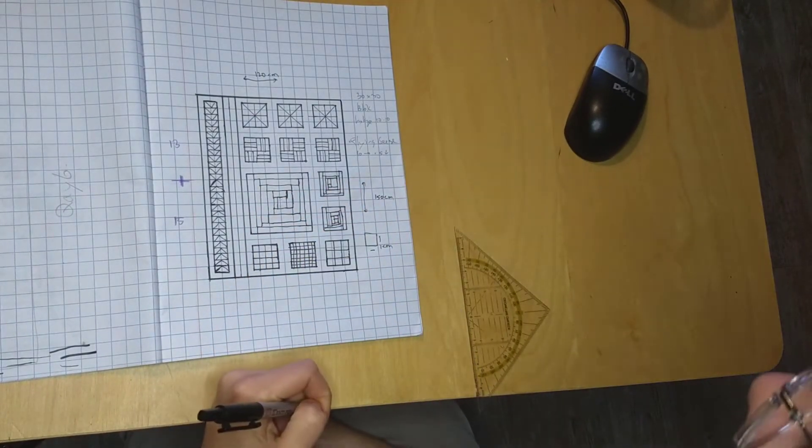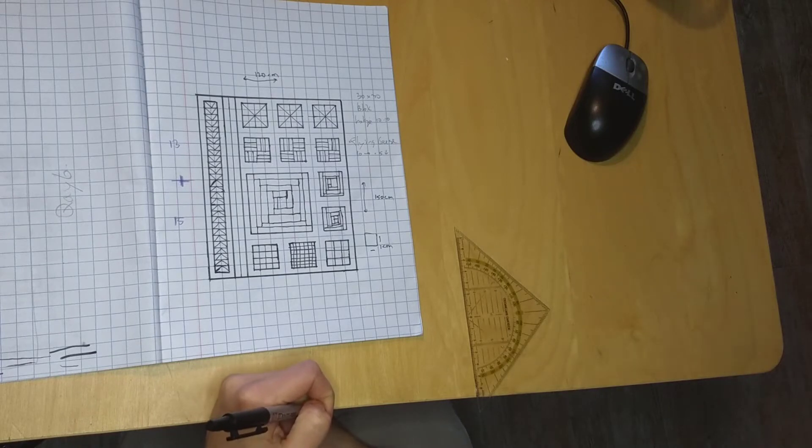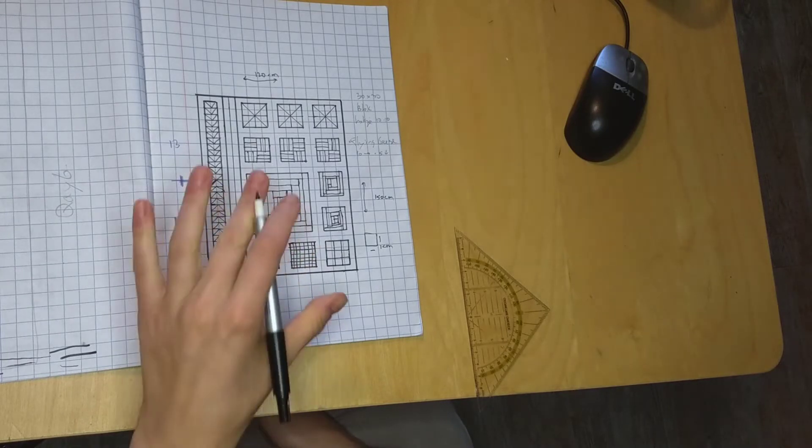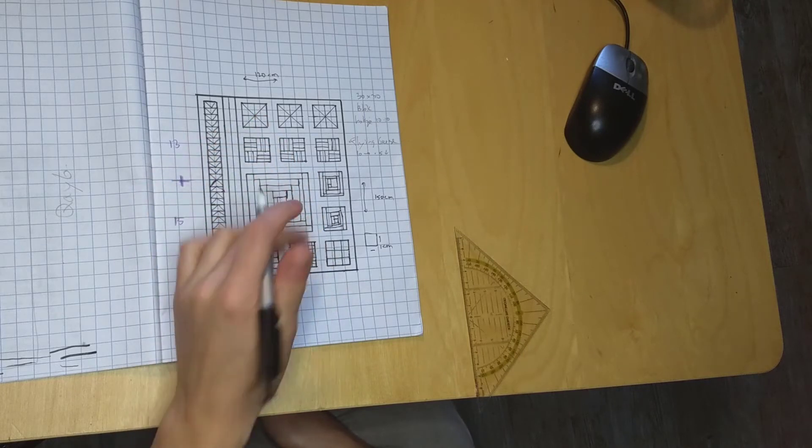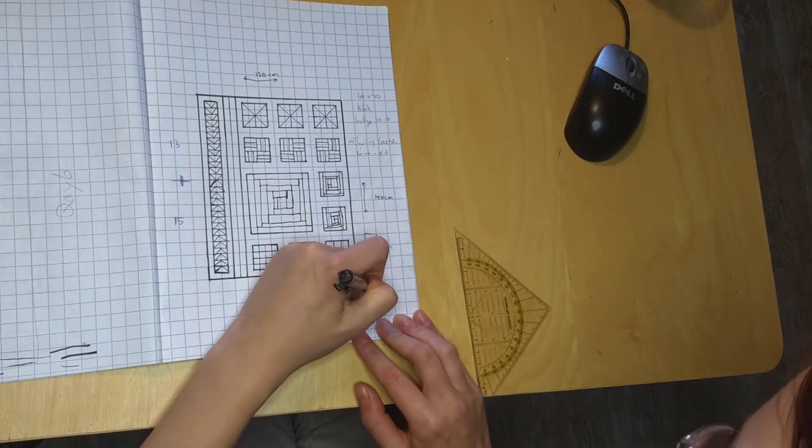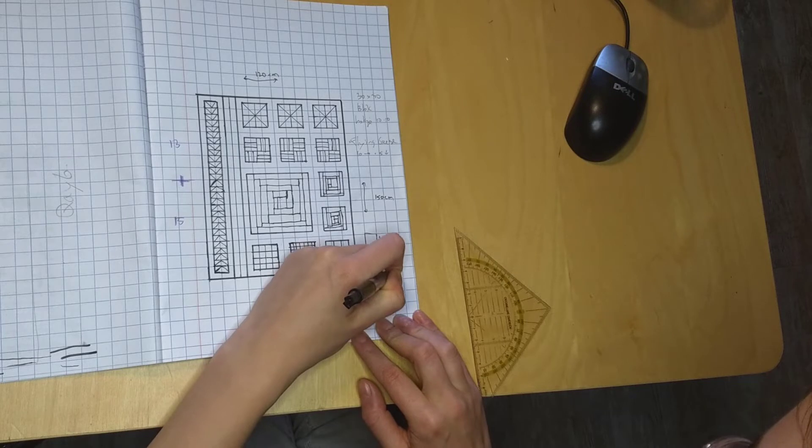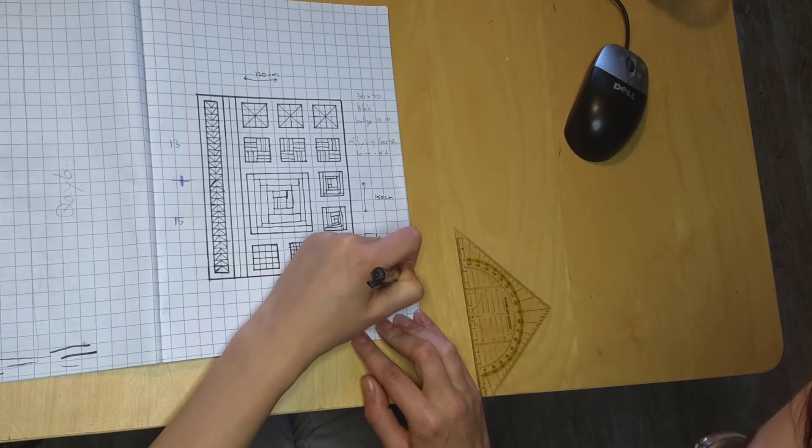Every block is one by one centimeter, which also means that the quilt is divided into several blocks of three by three centimeters. Like this. Clearly.